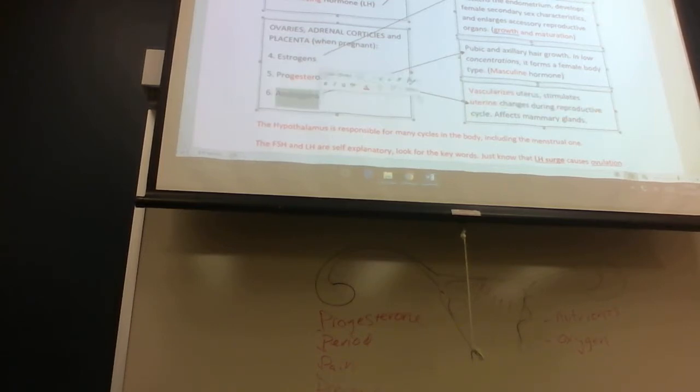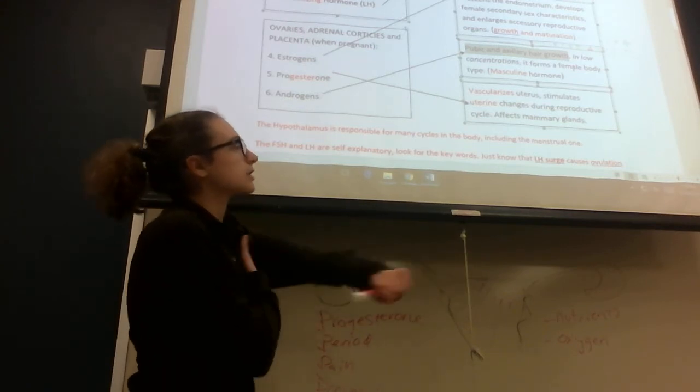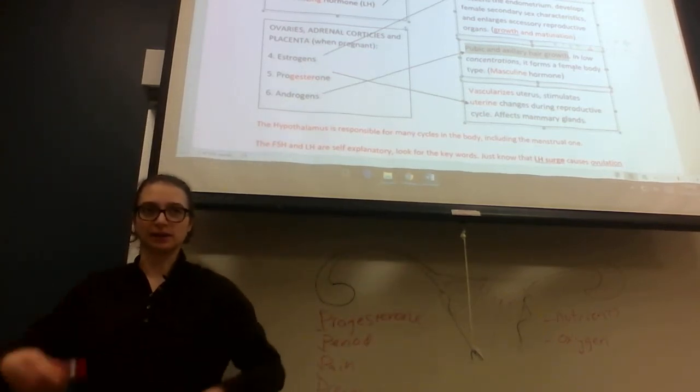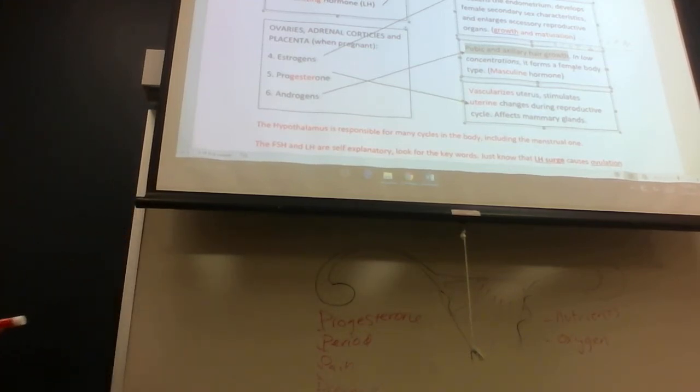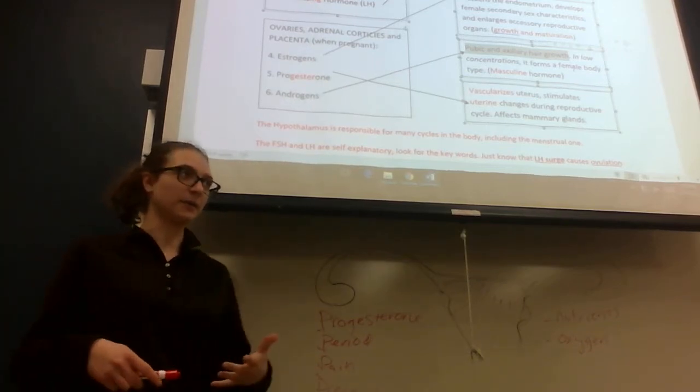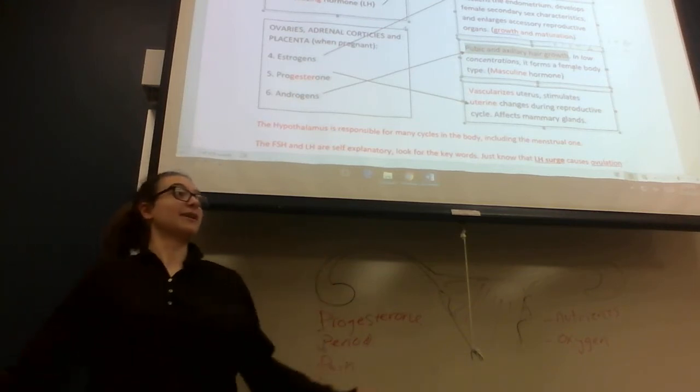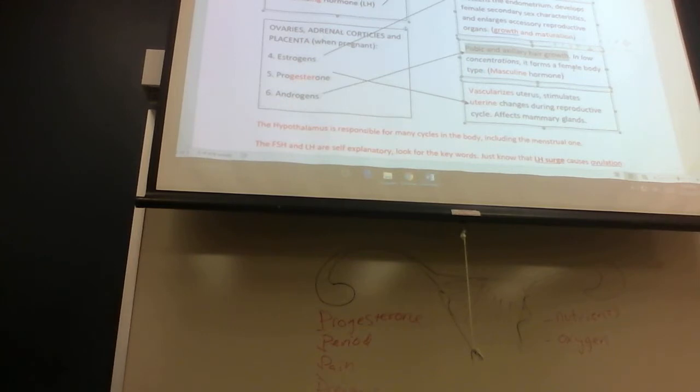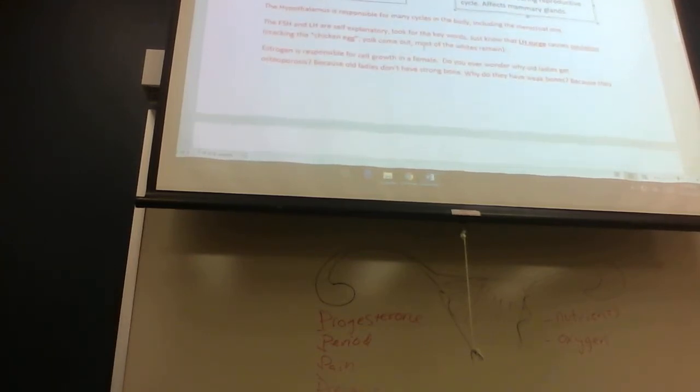Androgens. Andro, actually in Greek, means man. You have pubic, which is private parts, and axillary, which is your armpit. You have hair growth there. So androgen, think about it: man. Men are hairy. In low concentrations, it forms the female body type. But if in high concentrations, it forms the male body type. We're low concentration. But then you see some females who are built like men, and you think, how much androgen do you got?